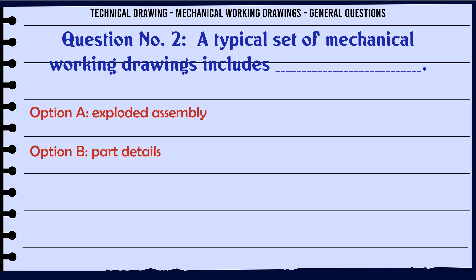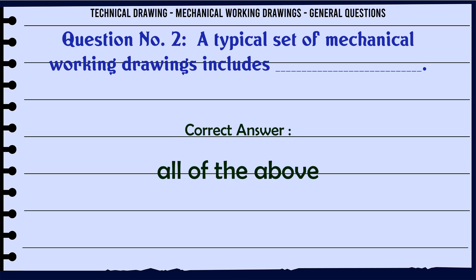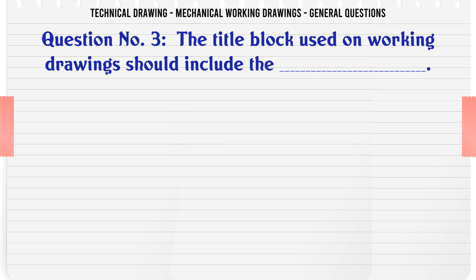A typical set of mechanical working drawings includes: A. Exploded assembly, B. Part details, C. Parts list, D. All of the above. The correct answer is All of the above.